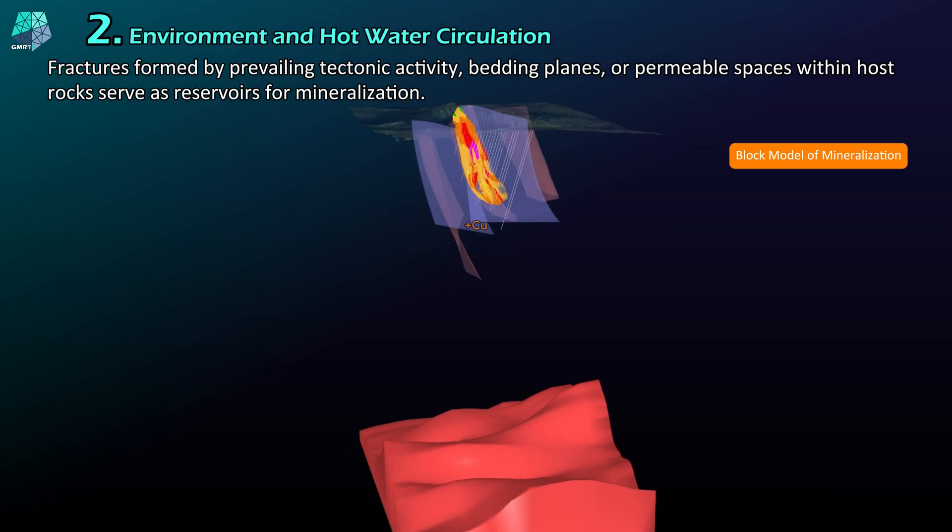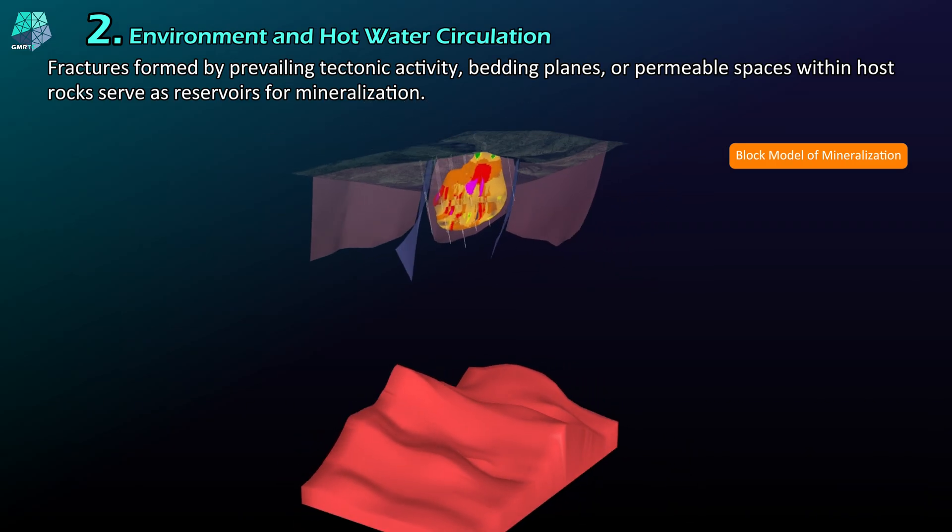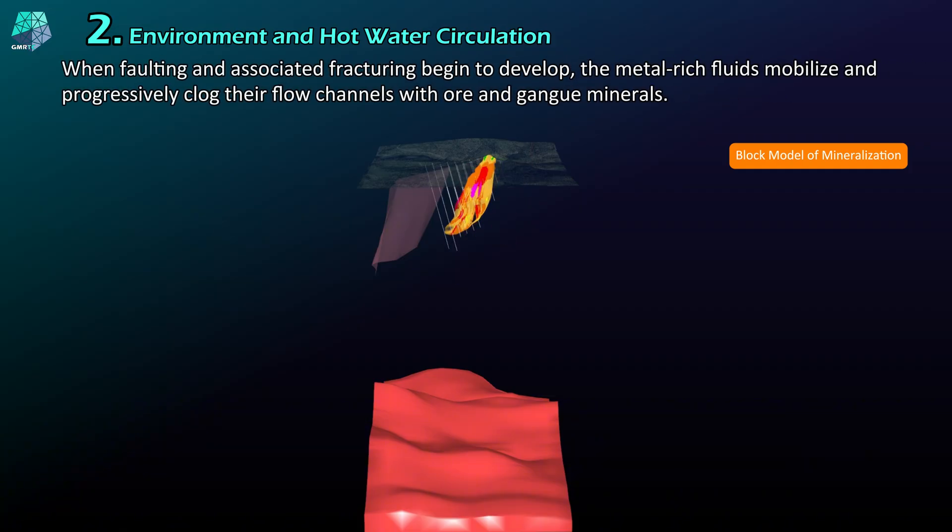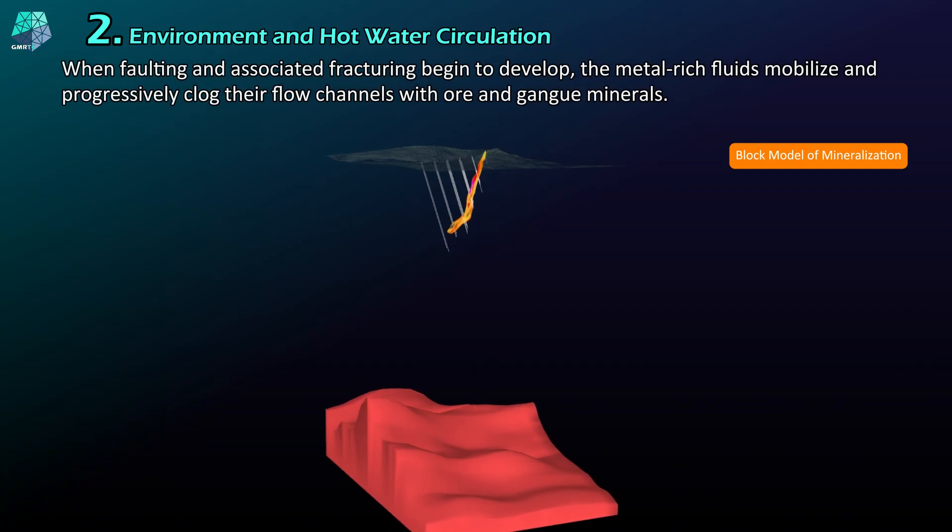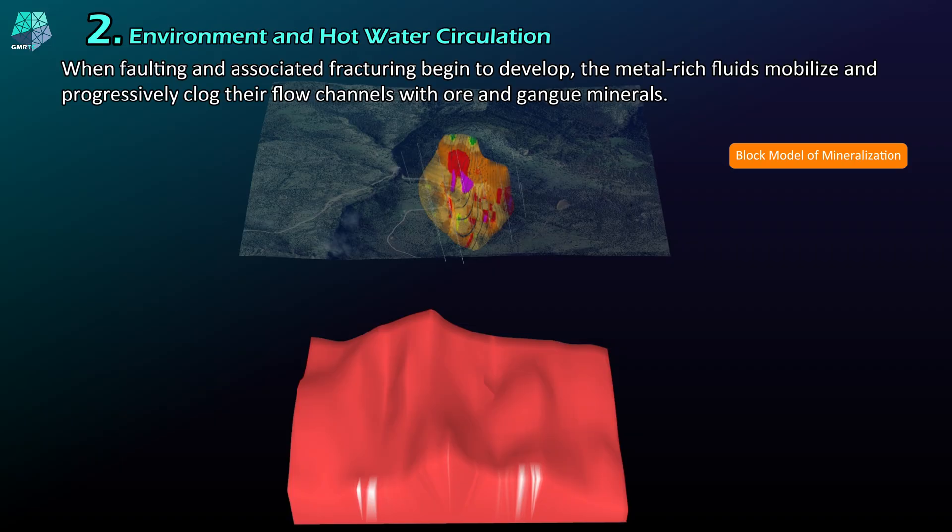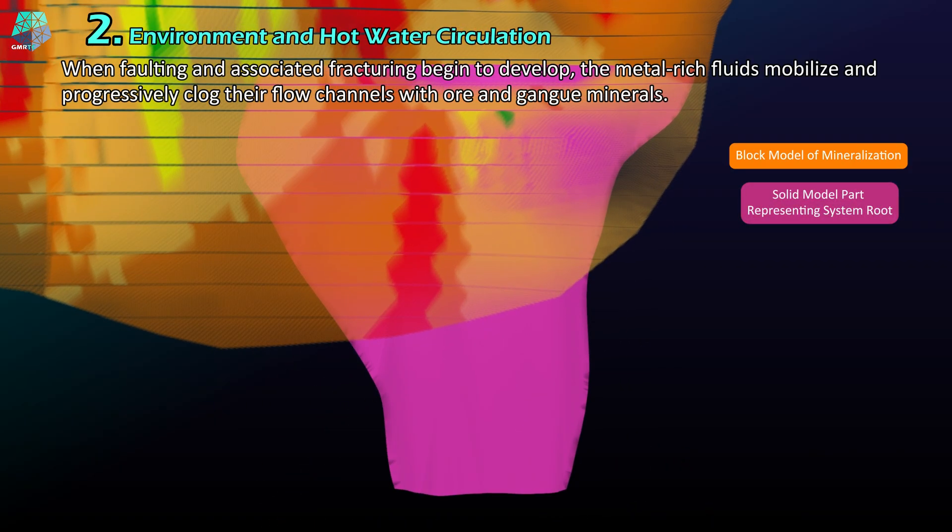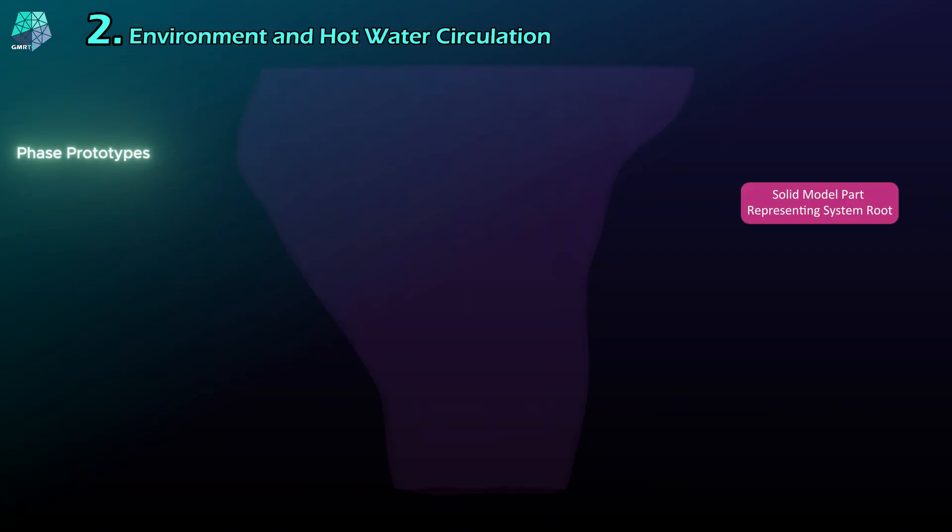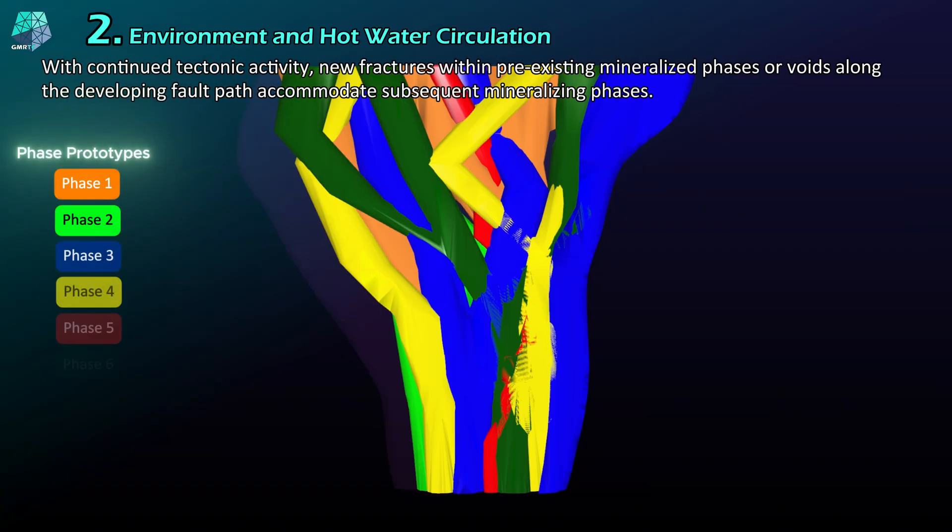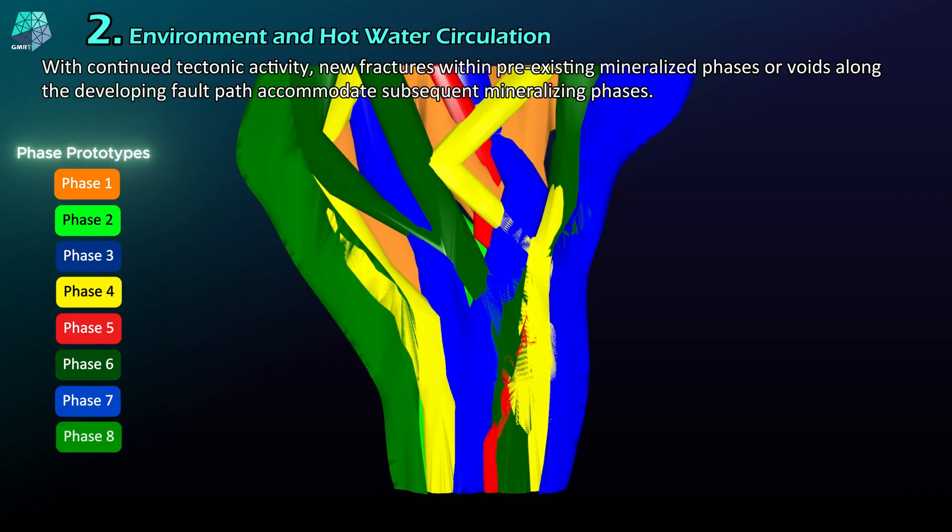When faulting and associated fracturing begin to develop, the metal-rich fluids mobilize and progressively clog their flow channels with ore and gangue minerals. With continued tectonic activity, new fractures within pre-existing mineralized phases or voids along the developing fault path accommodate subsequent mineralizing phases.